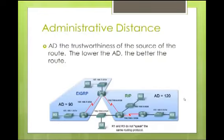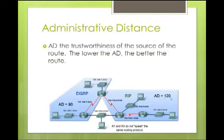Administrative distance is the trustworthiness of the source of the route — the lower the administrative distance, the better the route. Looking at this picture, if I want to go from router 2 down to PC5, I have two ways: to the left or to the right. The router will install the route with the lower administrative distance. It would choose the EIGRP route going left because it has an administrative distance of 90, whereas RIP on the right has an administrative distance of 120. When two or more routes to the same destination have the same administrative distance and metric, load balancing will occur.